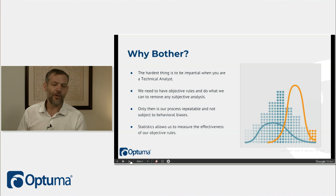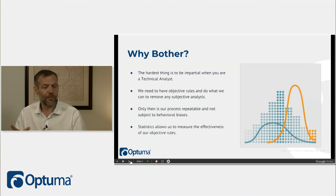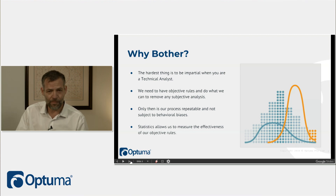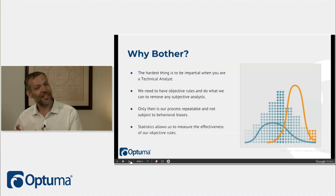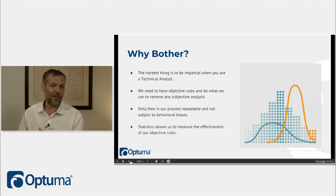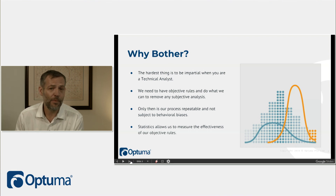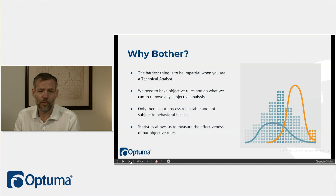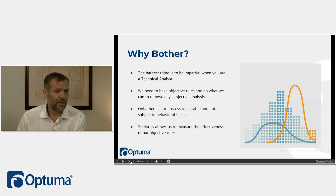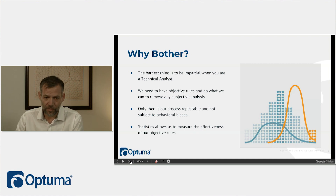That's not quite true — if you're doing trendline analysis you could go through lots of charts and instances manually, but the problem is that you can't get software to do it, and that's why we say make sure it's an objective rule, not open to subjective biases. We really want to have a repeatable process — that's the most important part — and statistics allows us to measure the effectiveness of our results.